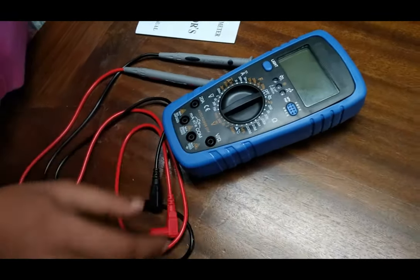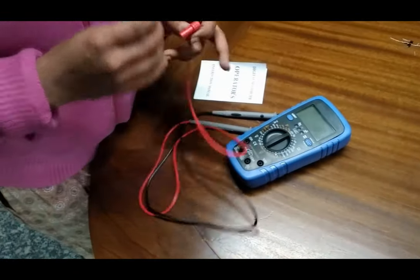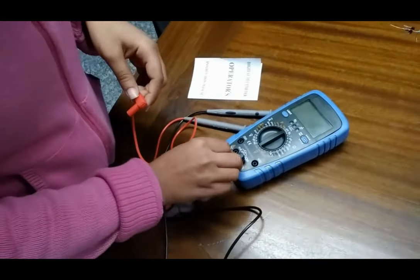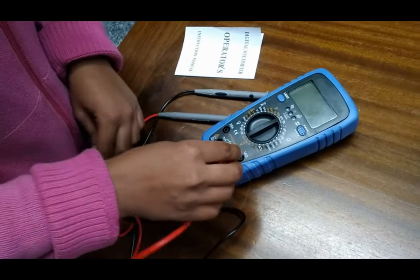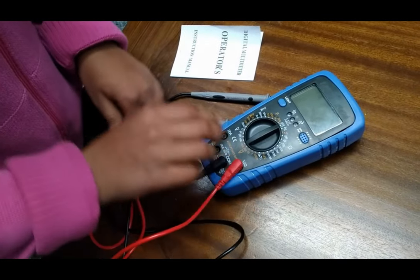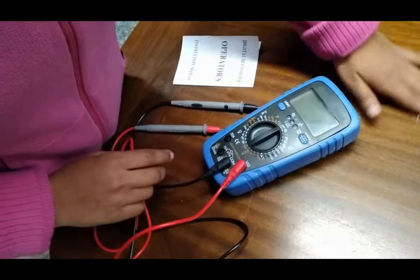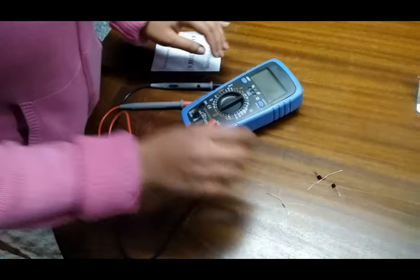Now we are connecting the patch cords here. The negative goes with the common terminal and the positive red wire with the voltage terminal. Now we are testing our transistors and resistors.